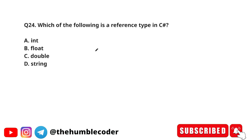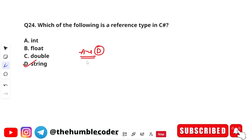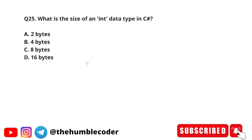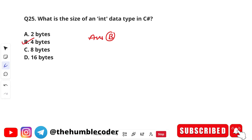Which of the following is a reference type in C sharp? The options are: A) int, B) float, C) double, and D) string. The correct answer is option D — string is a reference type, while int, float, and double are value types. Next: What is the size of an int data type in C sharp? Options: 2 bytes, 4 bytes, 8 bytes, 16 bytes. The correct answer is 4 bytes.